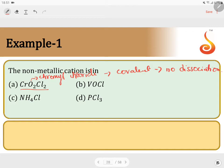If you consider VOCl, this dissociates to give V+ and OCl-. Therefore this is a metallic cation - this is a metal.